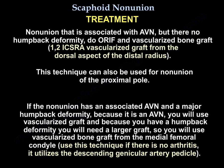For non-union associated with AVN but no humpback deformity, you will do open reduction internal fixation with vascularized bone graft — from the 1,2-intercompartmental supraretinacular artery (1,2-ICSRA), a vascularized graft from the dorsal aspect of the distal radius. This technique can also be used for non-union of the proximal pole. If the non-union has associated AVN and a major humpback deformity, you will use vascularized bone graft from the medial femoral condyle, utilizing the descending genicular artery pedicle. Use this technique only if there is no arthritis.